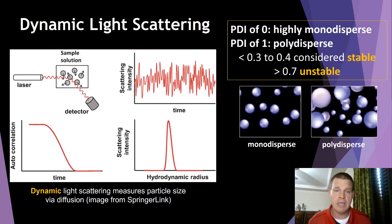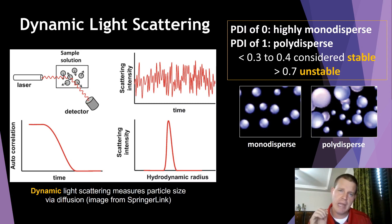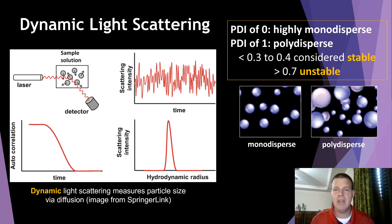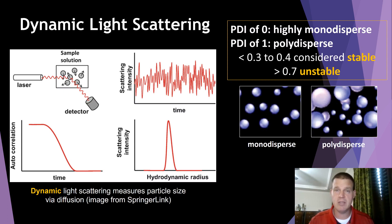A technique we're developing in my lab is an optical technique — not quite turbidity. Turbidity looks at cloudiness, but this is a step further: we shine a laser at the particles and use a detector to look at the scattering and intensity, giving us an idea of the size of the particles and their dispersity — whether some are small or large. This is called the polydispersity index. The more polydispersed a solution is, the more unstable it is and the greater the tendency for whiskey to haze.